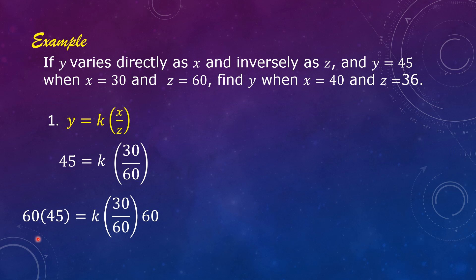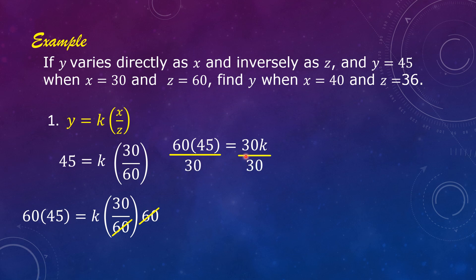We have 60 times 45 is equal to k times the quantity 30 over 60, times 60. Cancel 60 with 60, giving us 60 times 45 is equal to 30k. Divide both sides by 30. Cancel 30, and on the left side 60 divided by 30 equals 2, and 2 times 45 equals 90. So k is equal to 90.